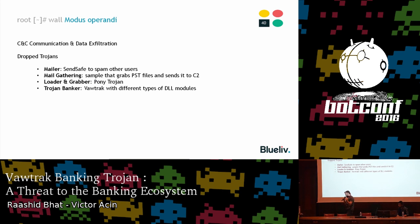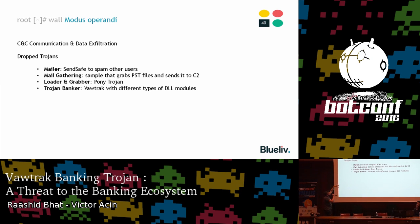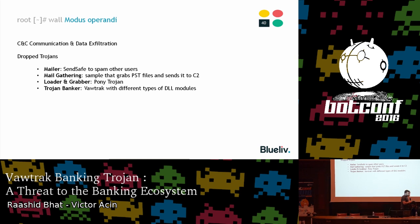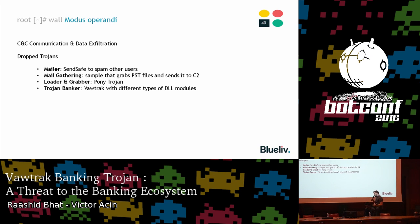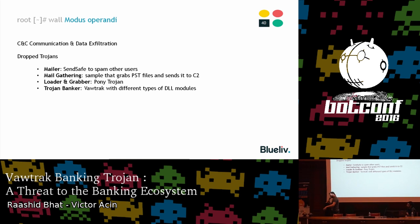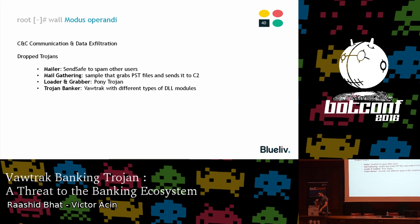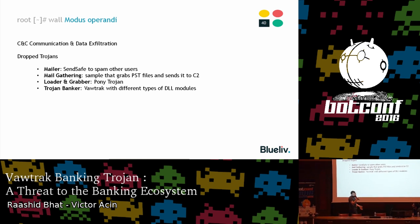Besides dropping Vawtrak, Moscow Zappo was also dropping other Trojans after switching to H1N1 and Janitor. First, they started dropping a mailer Trojan called Sansafe to spam other users. They also dropped an email gathering Trojan — a sample that looked for PST files to extract contacts from infected machines. With these two Trojans, Moscow Zappo created a synergy: infecting more machines provided more targets for spam campaigns, and those same machines could be used to conduct the campaigns.